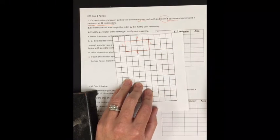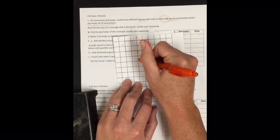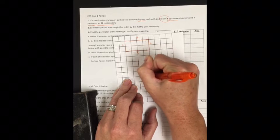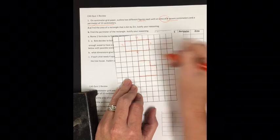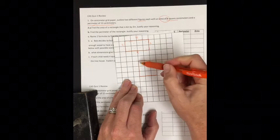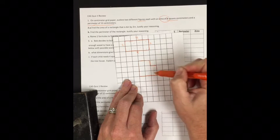It does say figure, it doesn't say rectangle, so you're not limited. You could do something a little bit different like this. Let's check our work: 1, 2, 3, 4, 5, 6, 7, 8. So my area is 8.